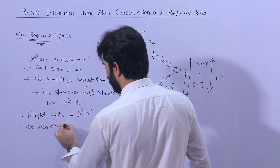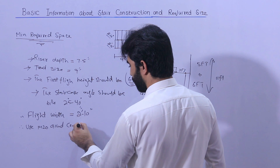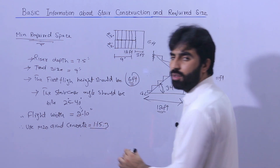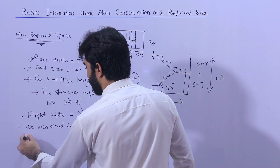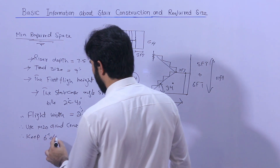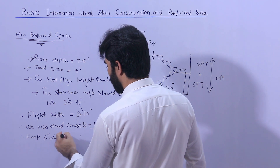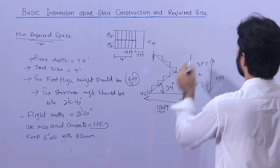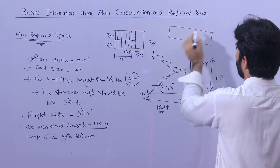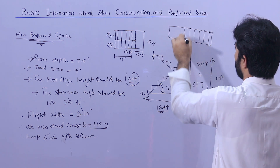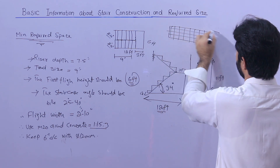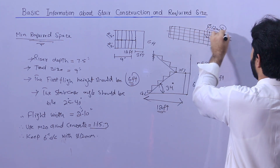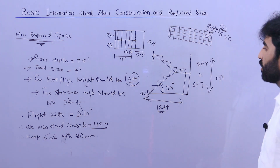For the structural requirements, remember to use M20 grade concrete, which has a mix ratio of 1:1.5:3. Keep 6 inches spacing center to center with 12 millimeter diameter steel rods. As shown here for one flight width, the spacing is 6 inches center to center with a minimum 12mm bar diameter. These are the structural details which are very important to know.